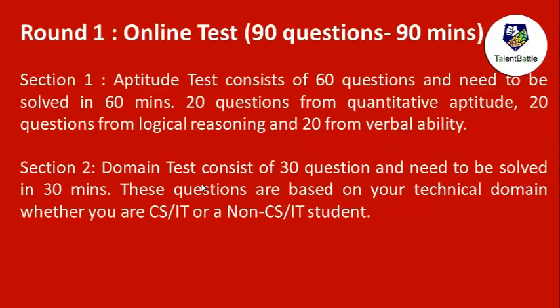The Hexaware drive consisted of 5 rounds. The first round was the online test — 90 questions in 90 minutes. These 90 questions were divided into Section 1 and Section 2. Section 1 was the aptitude part, which consisted of 60 questions to be solved in 60 minutes.